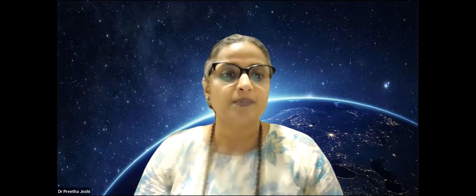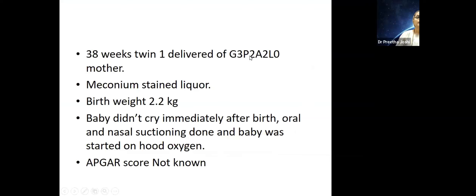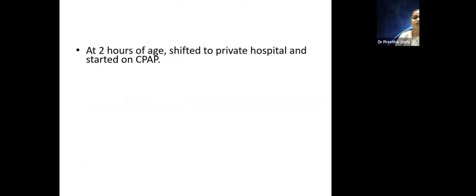We start with a typical baby that comes to most of our units. This is a 38-week twin delivered for a G3P2A2 mother through meconium-stained liquor. Birth weight was 2.2 kilos. Baby didn't cry immediately at birth, and oral and nasal suctioning was done. Baby was started on free-flow oxygen. Apgar scores were not known. Baby was born in a smaller nursing home and at two hours of age shifted to a private hospital.